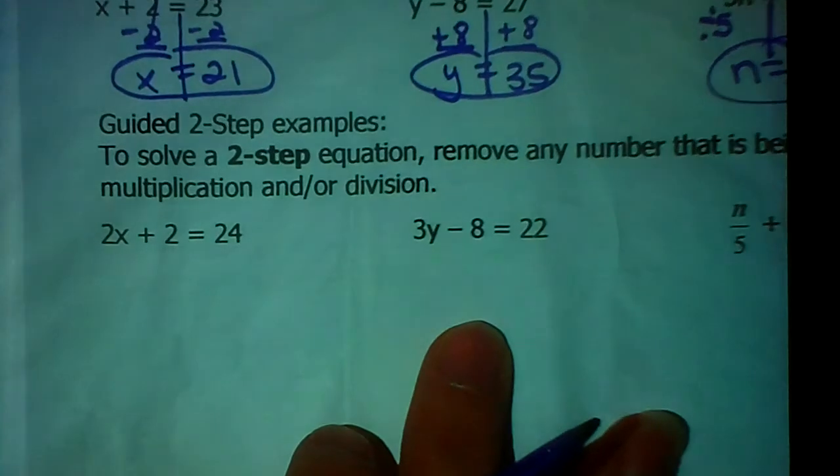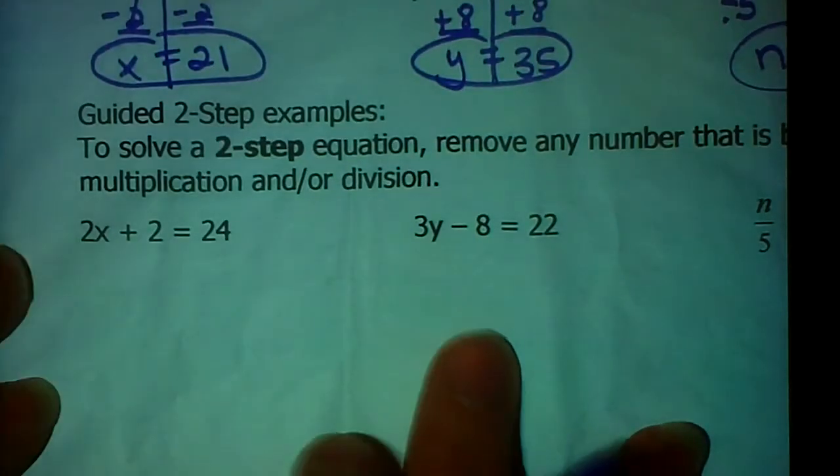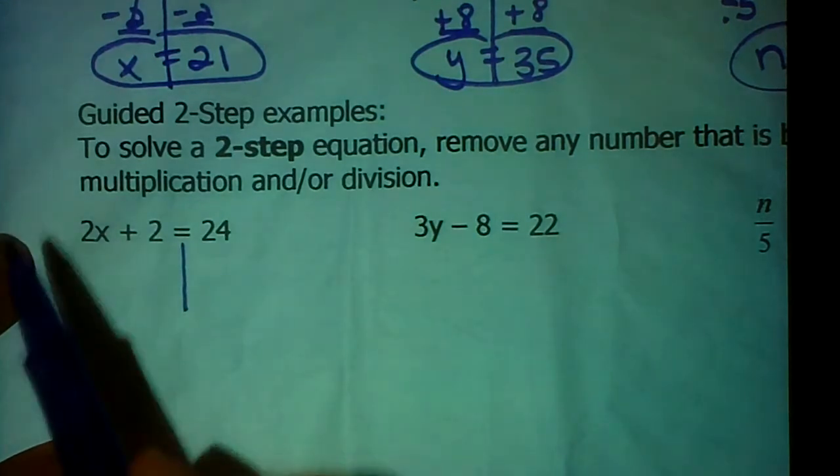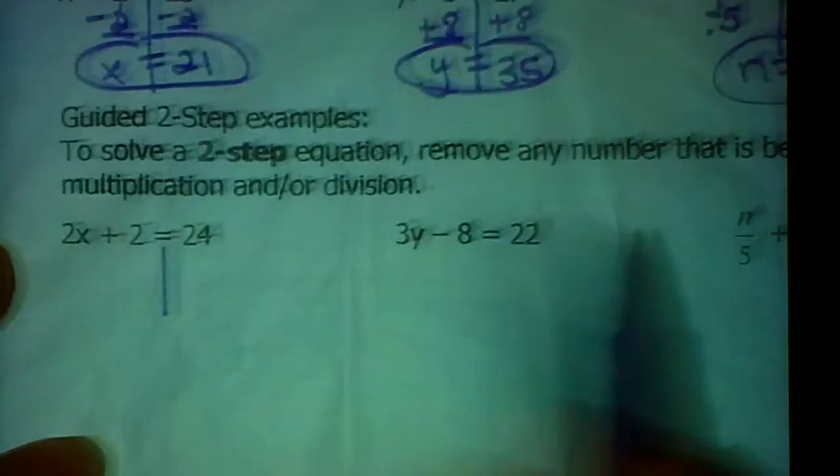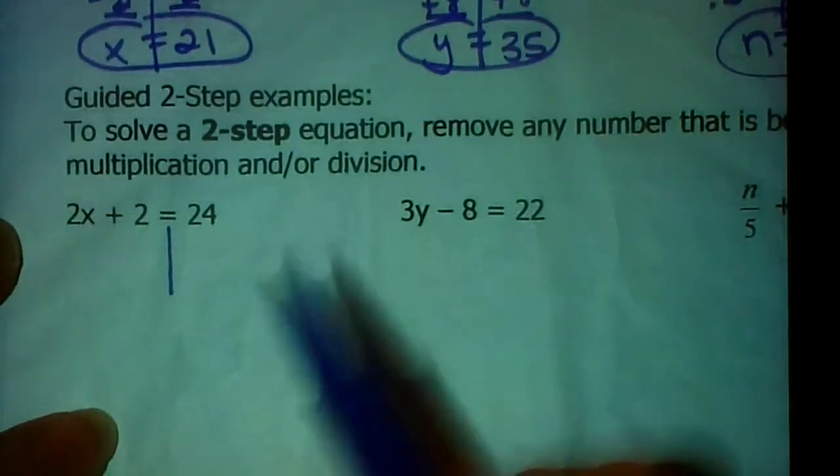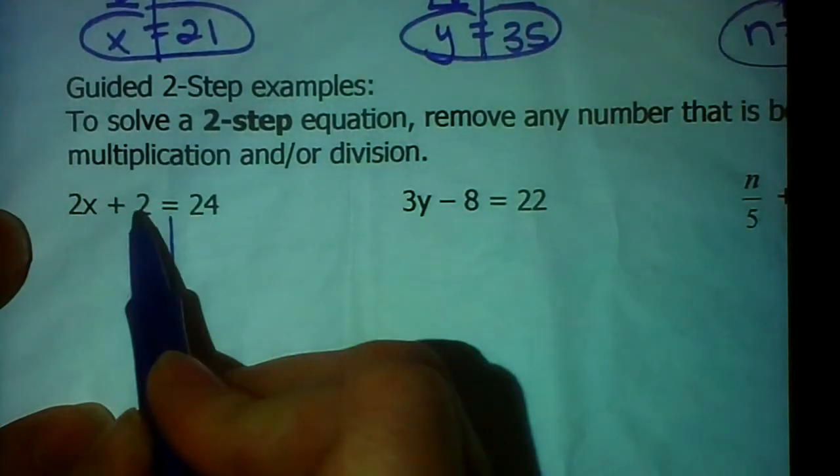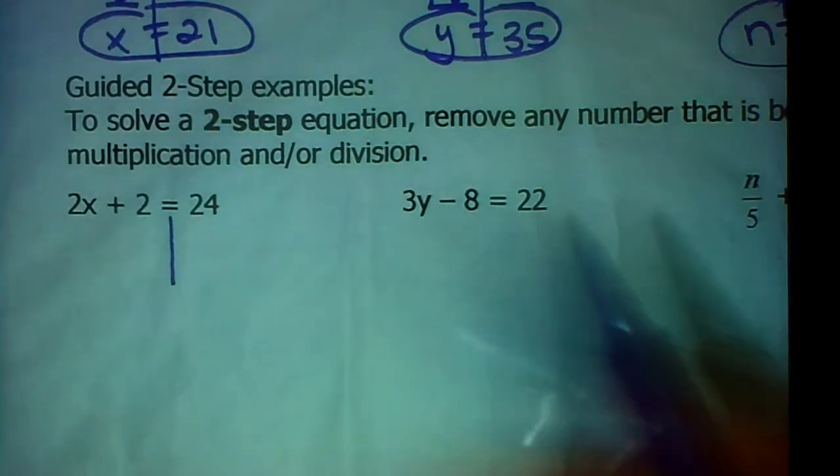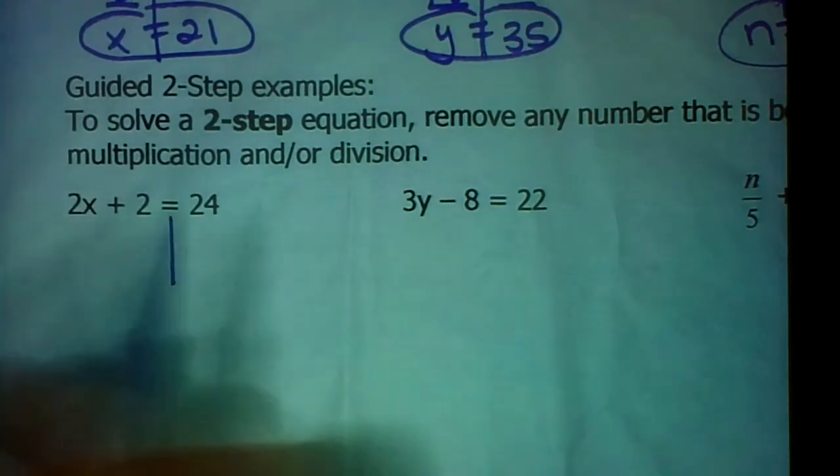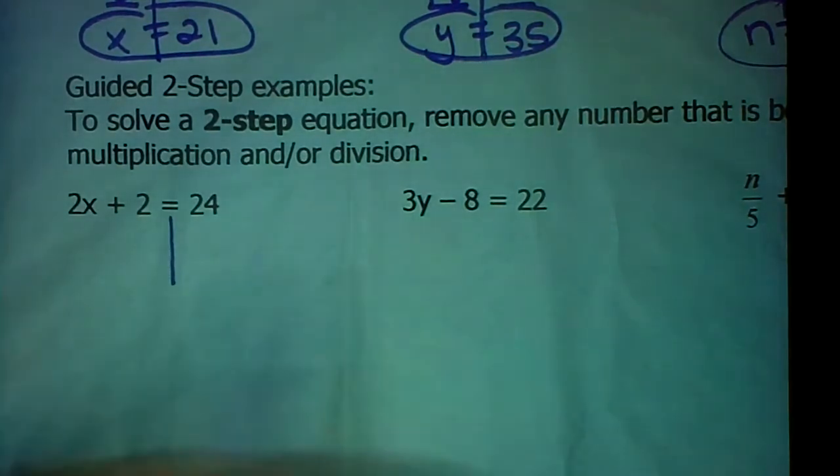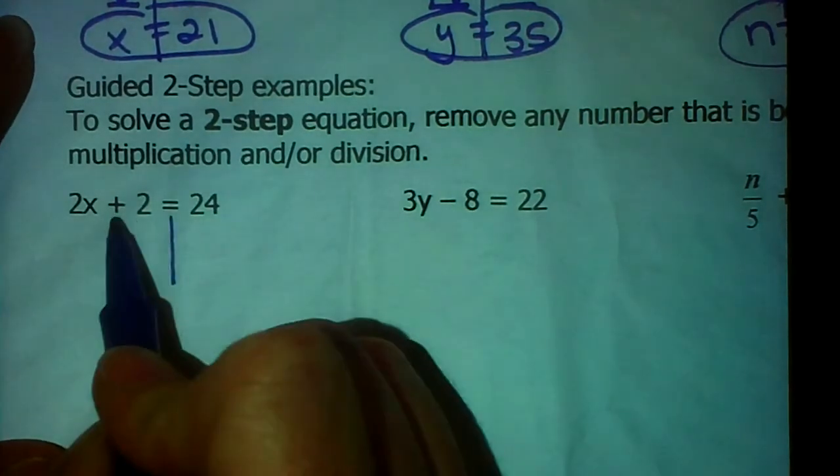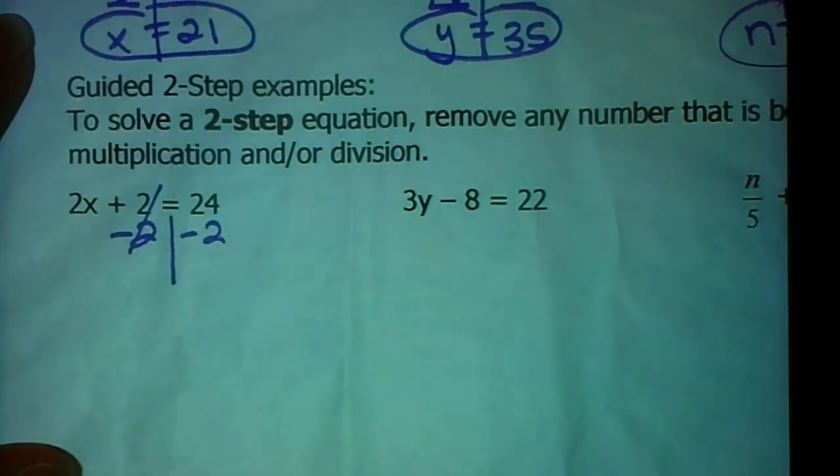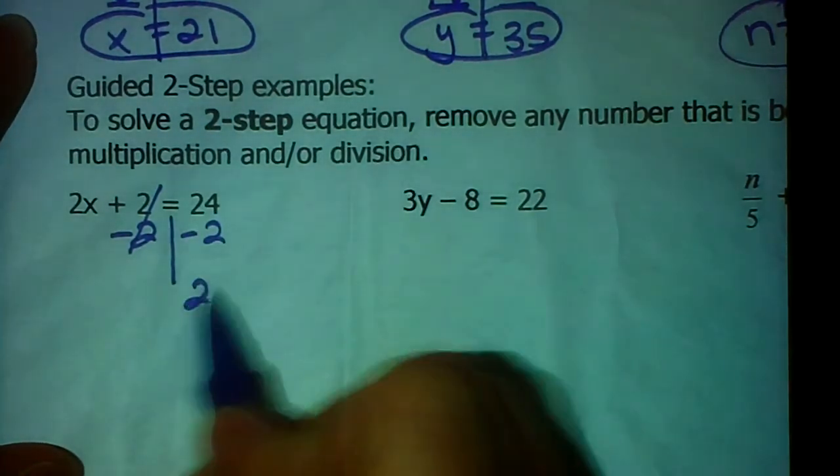So if you look at this first problem, it says 2x plus 2 equals 24. Our goal is to find out what x is. So we're going to get rid of everything over here that's happening to the x. So up there it said get rid of anything that is being added or subtracted first. So I want to get rid of this plus 2. Your goal is to get to the variable. It's like a present. It's the prize. So think of it as like unwrapping a present, like the last thing you would do is take off the bow. The first thing you do is take off the paper. So we're going to get rid of this right here. Opposite of adding 2 is subtracting 2. So that literally just goes away. We'll do the same thing over here. 24 minus 2 is 22.